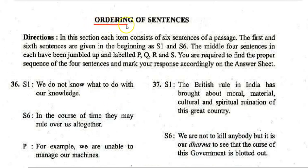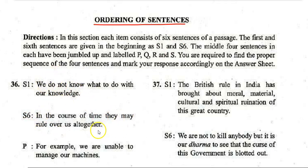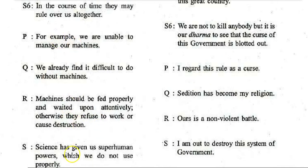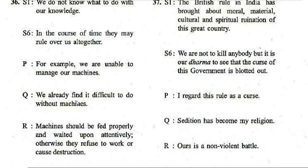The next section in English is Ordering of Sentences. Each item consists of six sentences of a passage. The first and sixth sentences are given as S1 and S6. The middle four sentences are jumbled and labeled P, Q, R, and S. You are required to find the proper sequence of the four sentences and mark your response accordingly.